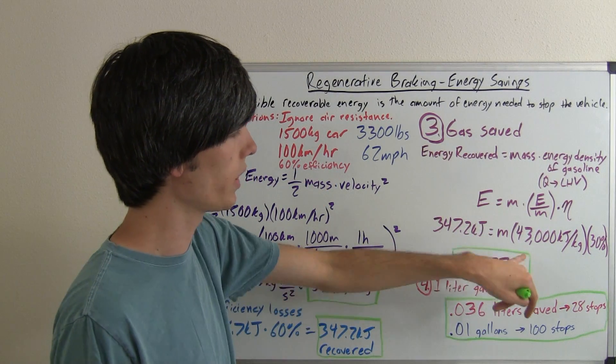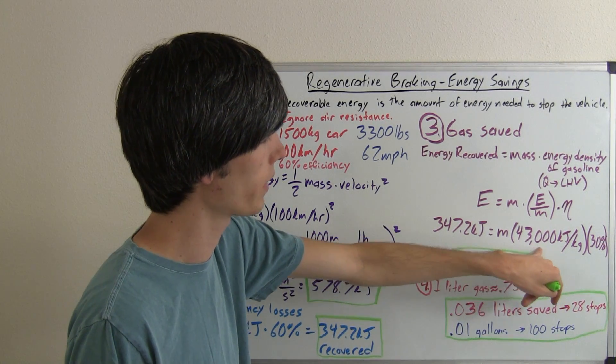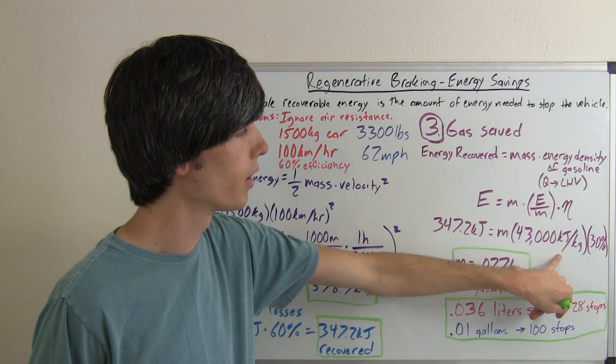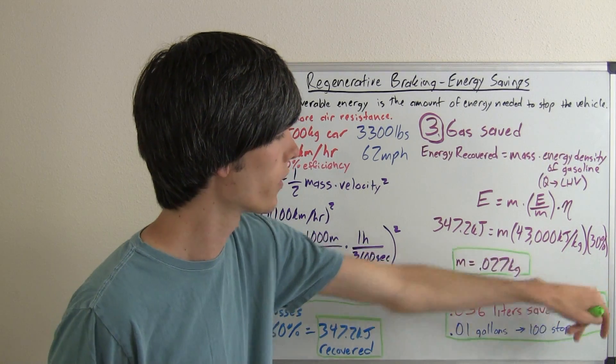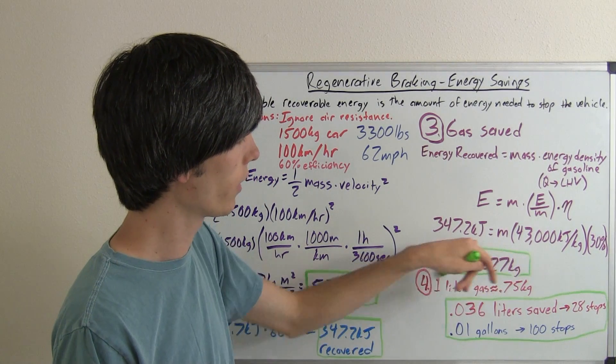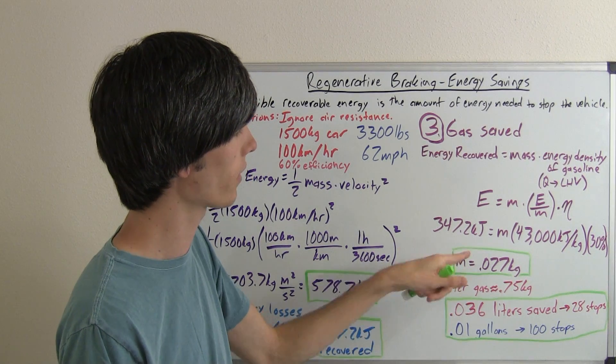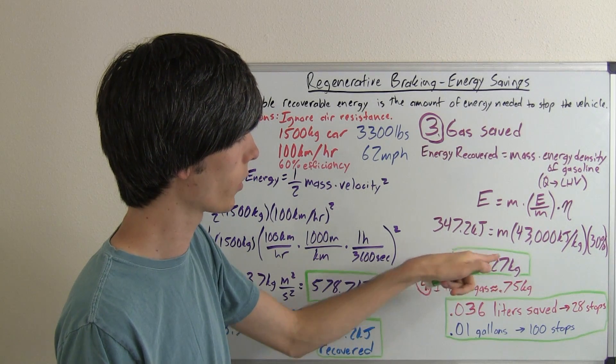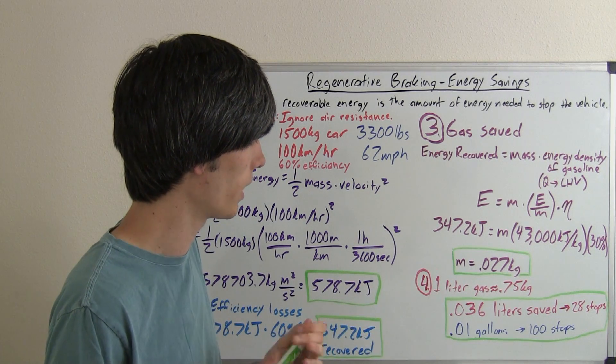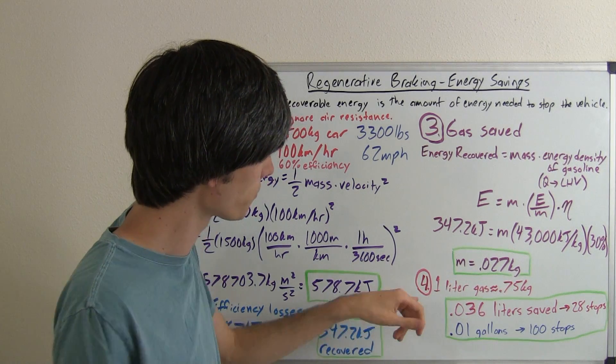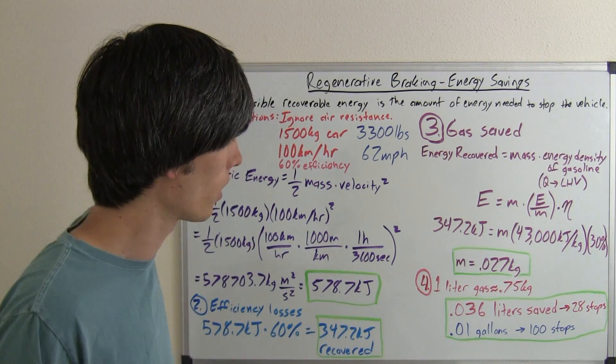347.2 equals mass times that lower heating value of gasoline, which is 43,000 kilojoules per kilogram. We're going to say our efficiency of our engine at producing energy is 30%. So if you take 347.2 divided by these two numbers multiplied together, you get the mass of gasoline that you saved, 0.027 kilograms. Pretty small number, but it is actually pretty cool that you can save that amount of energy. And of course, with multiple stops, many times, it all adds up.